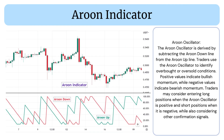Aroon Oscillator: The Aroon Oscillator is derived by subtracting the Aroon Down line from the Aroon Up line. Traders use the Aroon Oscillator to identify overbought or oversold conditions. Positive values indicate bullish momentum, while negative values indicate bearish momentum. Traders may consider entering long positions when the Aroon Oscillator is positive and short positions when it is negative, while also considering other confirmation signals.